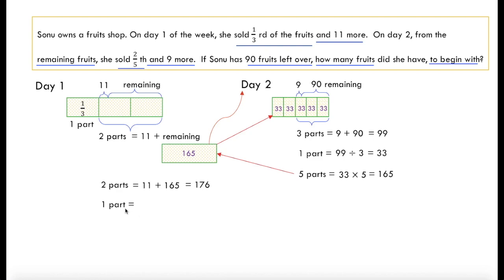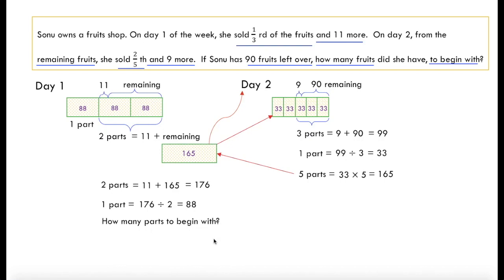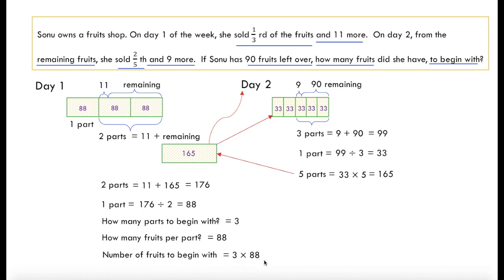Now we can find 1 part. If 2 parts is 176, then 1 part is 176 divided by 2, which equals 88. That means each of the 3 equal parts on day 1 has 88 fruits. So we replace the original parts with 88. To begin with on day 1, we have 3 parts with 88 fruits each, so the number of fruits to begin with is 3 times 88, which is 264 fruits.